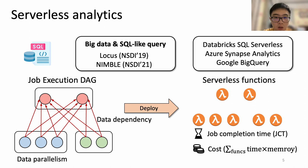First, we want the job to complete as fast as possible, which corresponds to job completion time, or JCT for short. Second, we also want to run the job at the lowest cost. On major serverless platforms, the cost of a function is the product of its execution time and memory usage.